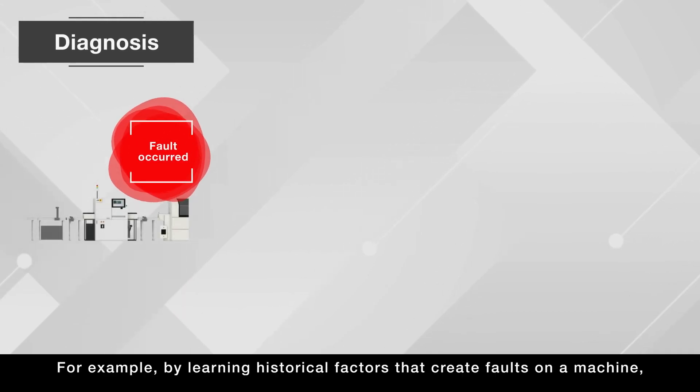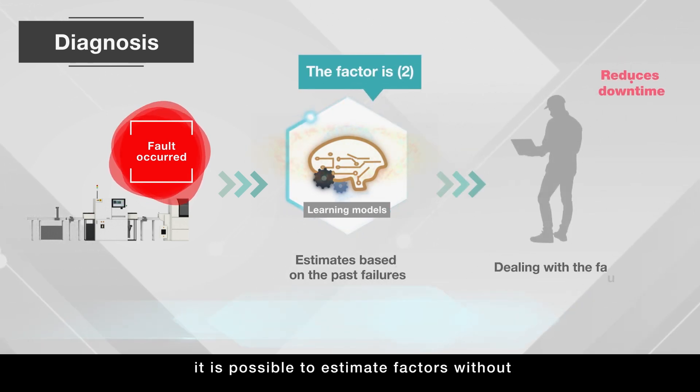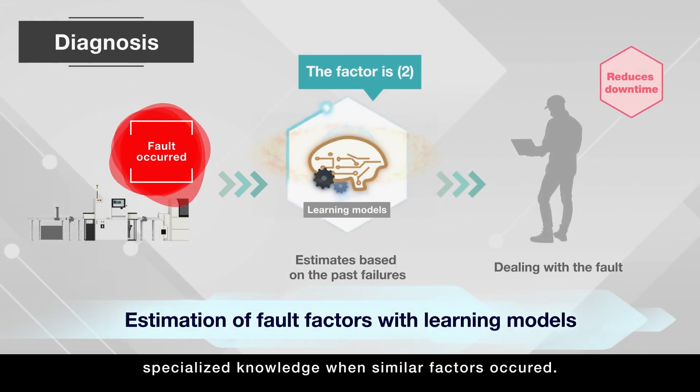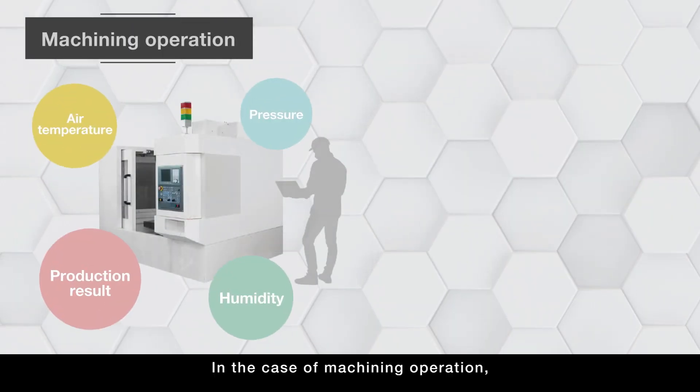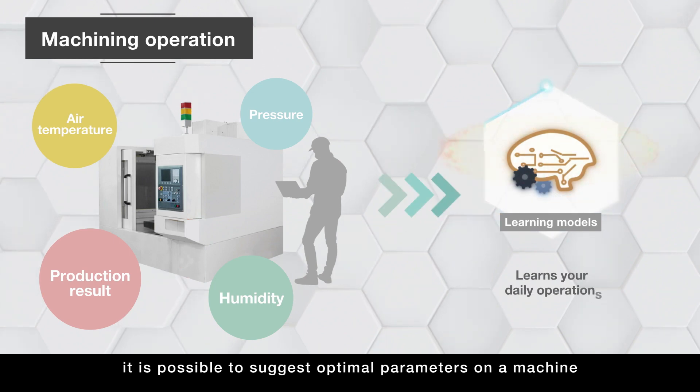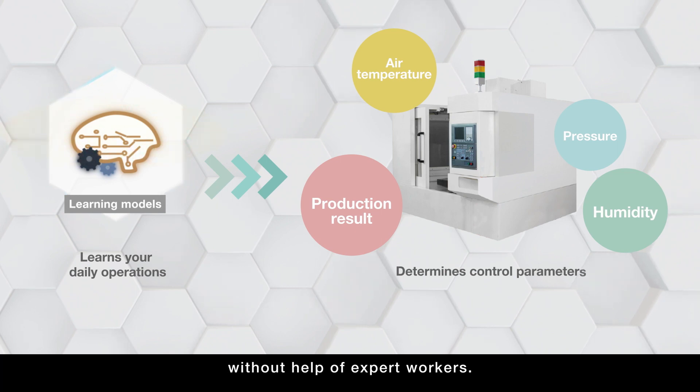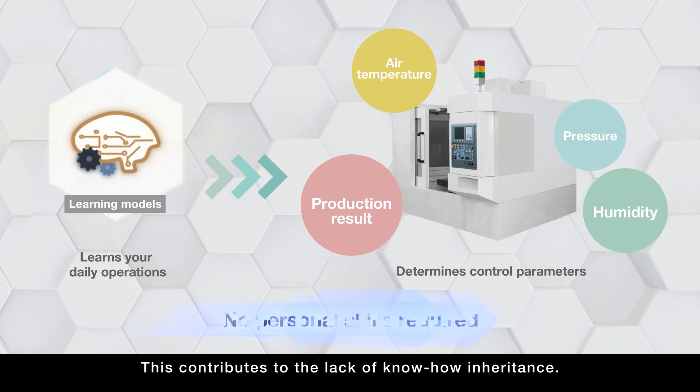For example, by learning historical factors that create faults on a machine, it is possible to estimate factors without specialized knowledge when similar factors occurred. In the case of machining operation, through continuous learning of operational log, it is possible to suggest optimal parameters on a machine without help of expert workers. This contributes to the lack of know-how inheritance.